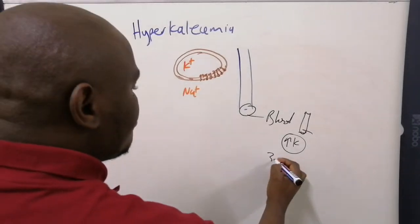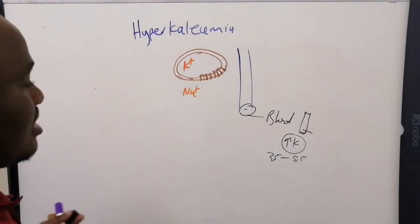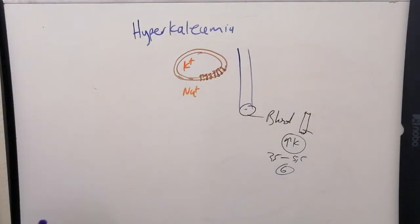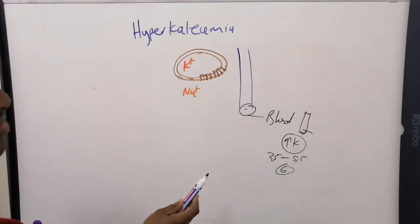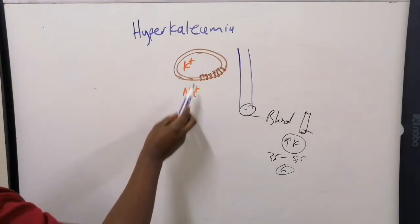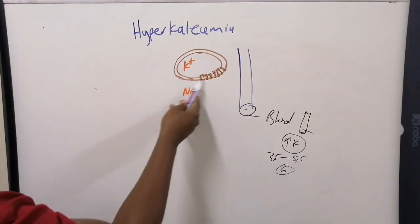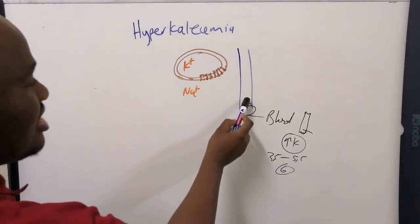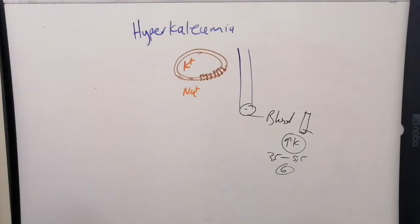The normal potassium is 3.5 to 5.5 depending where you are. For argument's sake, this patient has a potassium of 6 — so they've got hyperkalemia. Remember, the sample you took was from the intravascular space, not from the extracellular space and not from the cytosol. Whatever sample you take gives you a reflection of what is happening in the interstitial space. So if you've got hyperkalemia in the intravascular space, you also have hyperkalemia in the interstitial space.